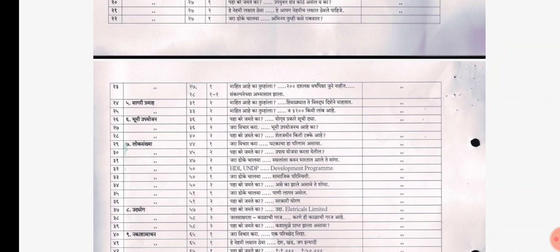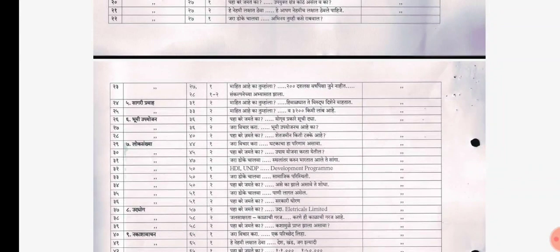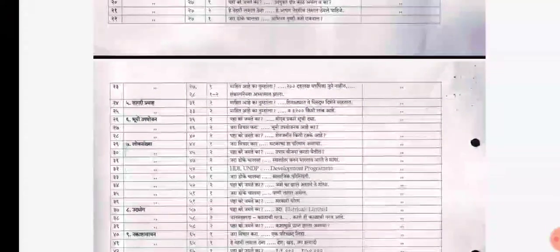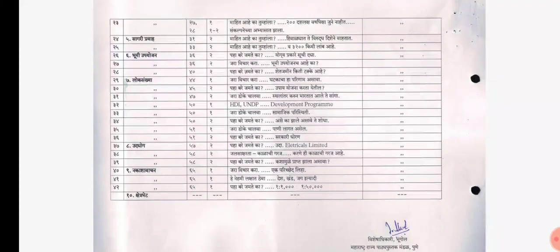In chapter number 5, you have page number 31, column number 2 activity cancelled, and page number 33, column number 2 cancelled. In chapter number 6, you have page number 36, column number 2, both the activities cancelled, and page number 40, column number 2 activity cancelled.